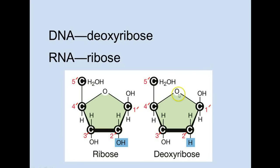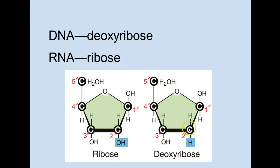The sugars are either ribose or deoxyribose, and we had a look at ribose earlier in the monosaccharides talk. The only difference between ribose and deoxyribose is the absence — the deoxy — of an oxygen on the second carbon. The carbon numbering uses the prime marker (that little apostrophe) to distinguish the carbons in the sugar from the carbons in the base. So deoxyribose is missing an oxygen on the two-prime carbon. This is the five-prime carbon on deoxyribose and the five-prime carbon on ribose.